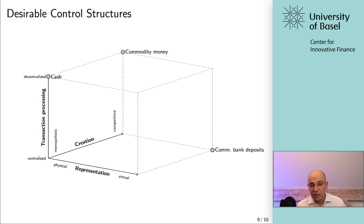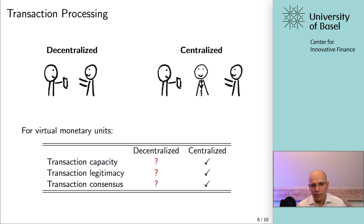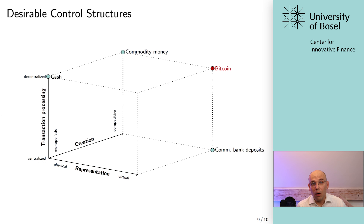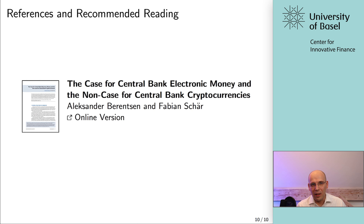That is what Bitcoin does. Bitcoin is also in this upper right corner — exactly in the place where Yap has been. What's really interesting about Bitcoin, as you'll see in the more technical lectures, is that it solves these three issues — transaction capacity, legitimacy, and consensus — in truly novel ways, and it works at large-scale networks, not restricted to small-scale economies or small groups with established trust relationships. That is really what is so exciting about Bitcoin, or more generally about public blockchain networks.